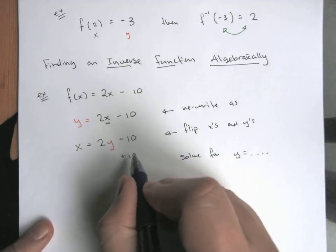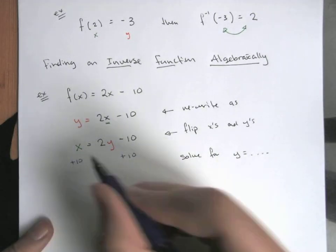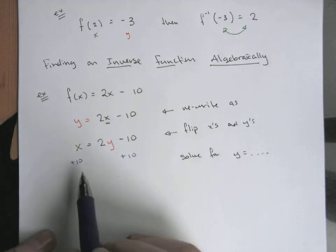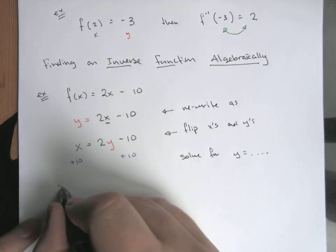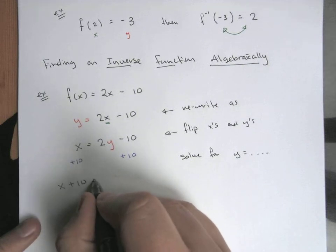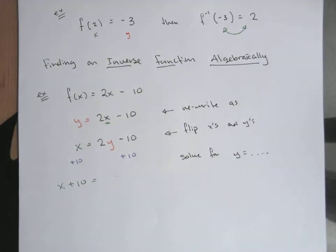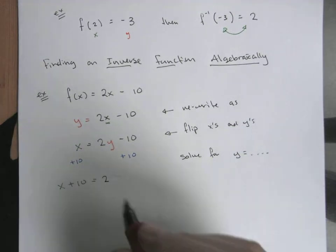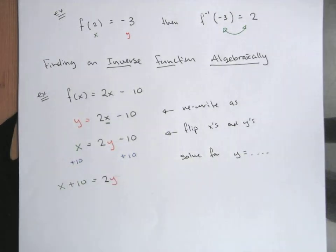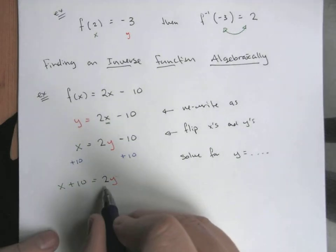What are the steps to do that? Well, we're just going to reverse everything that's here. So plus 10 to both sides to cancel out the tens. That means x plus 10 equals 2 times y.